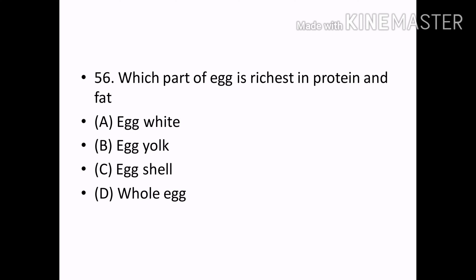Which part of egg is richest in protein and fat? Options — Egg white, Egg yolk, Egg shell, Whole egg. Correct answer: Option B — Egg yolk.